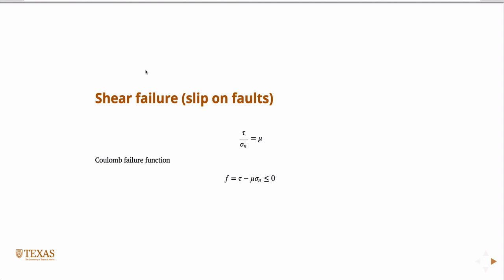Here's the actual equation that we're talking about. The ratio of the shear to normal - we write it like this. So we say that if the shear stress is some coefficient times the normal stress, if that's less than zero, then the fault will not slip.